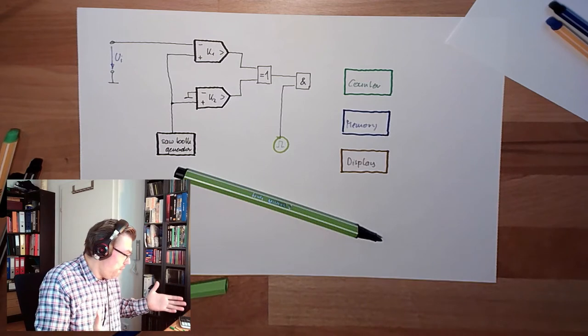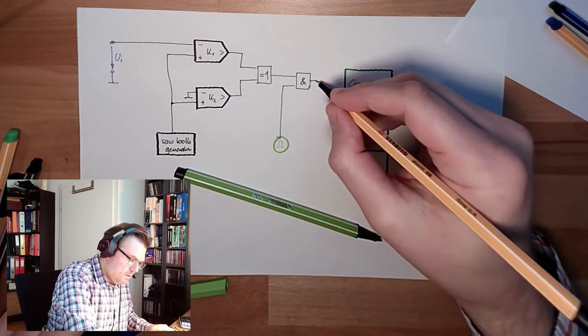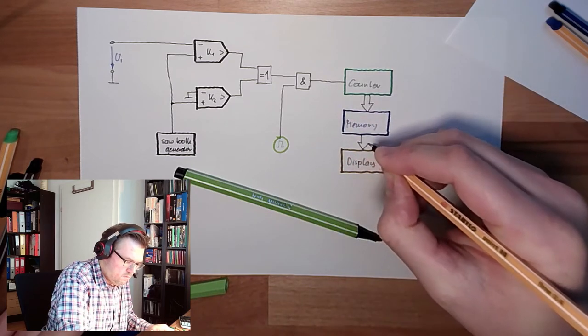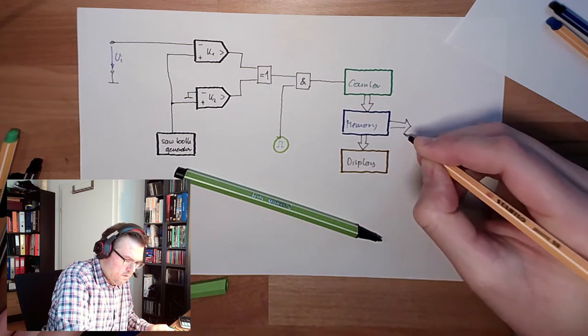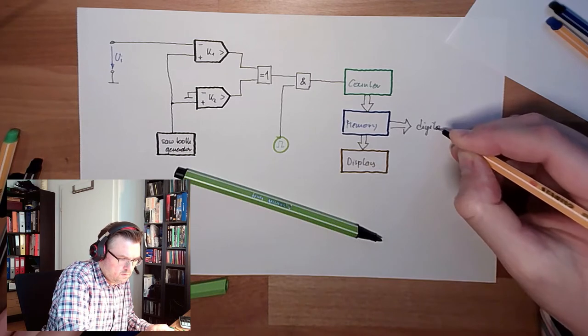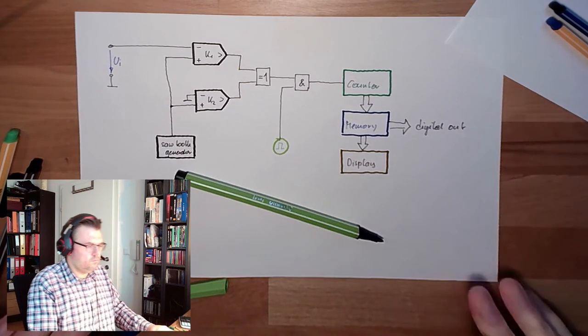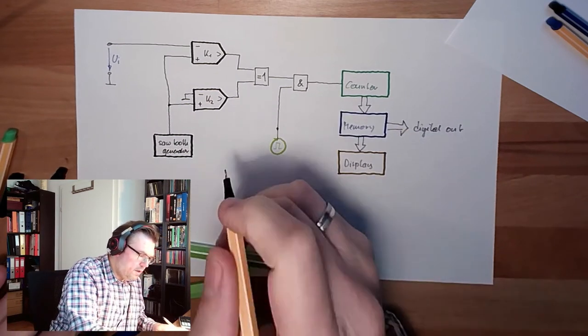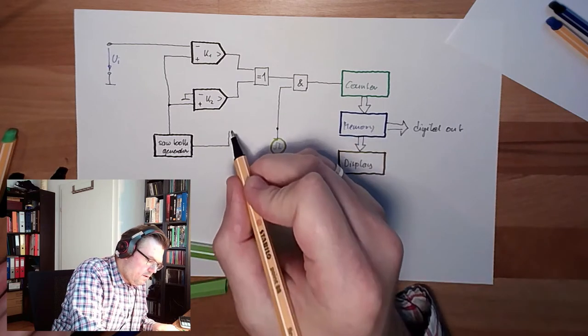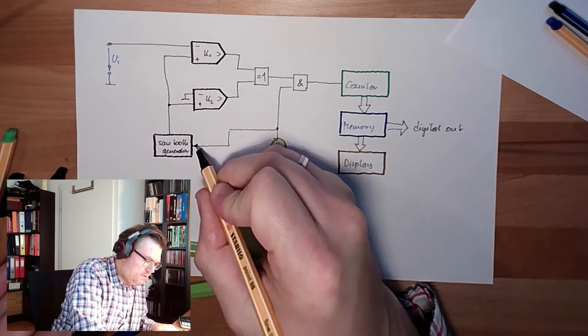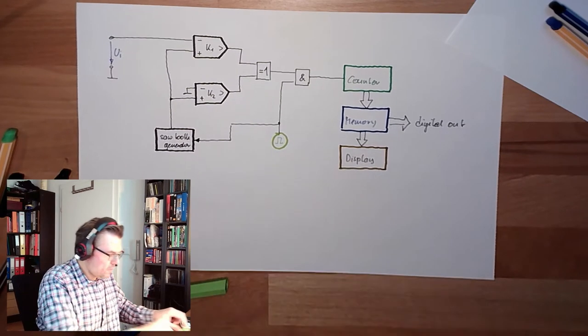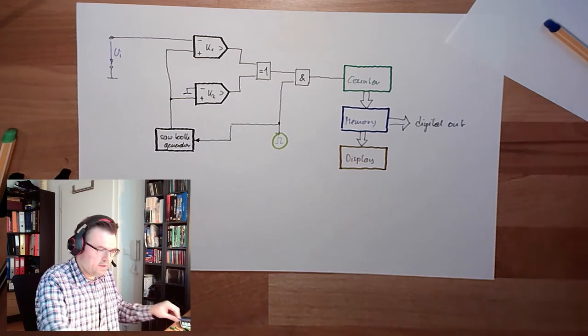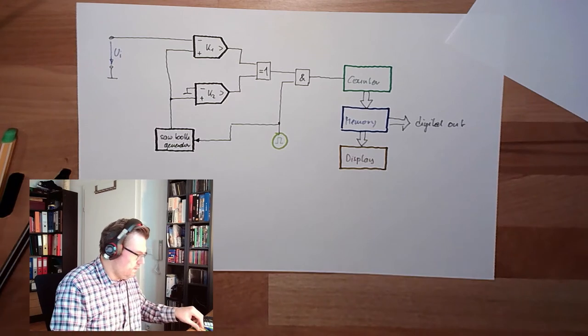This needs to be just an upwards counter. This is giving the counter value, and here I have my digital output. There is also something coming to this sawtooth generator. Now this is the working principle. What's a sawtooth voltage? Let's have a look.